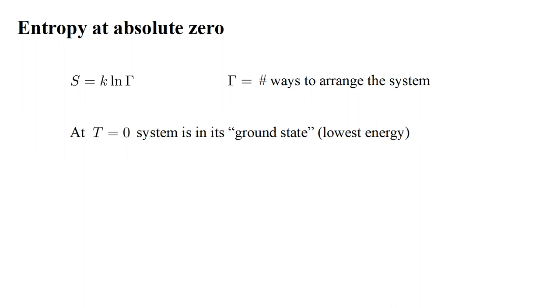Thinking quantum mechanically, a system has various possible energy states. At absolute zero, it must be in its ground state, the state of lowest energy, since there is no thermal energy available to excite higher energy levels.